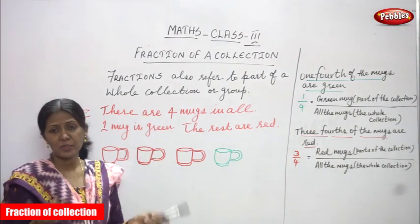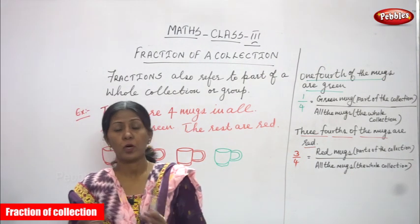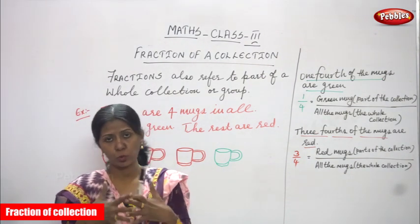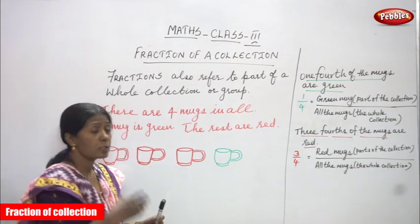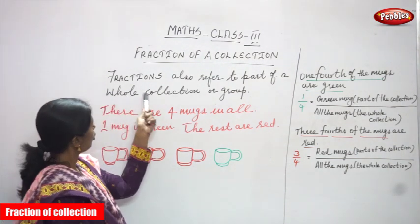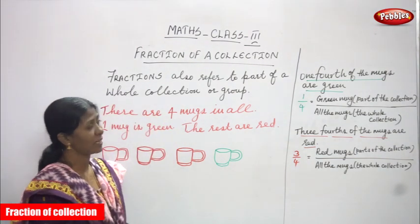So, collection means whole — means a collection or a group. Whole thing means collection or a group. Part of a whole collection or a group is called as a fraction.